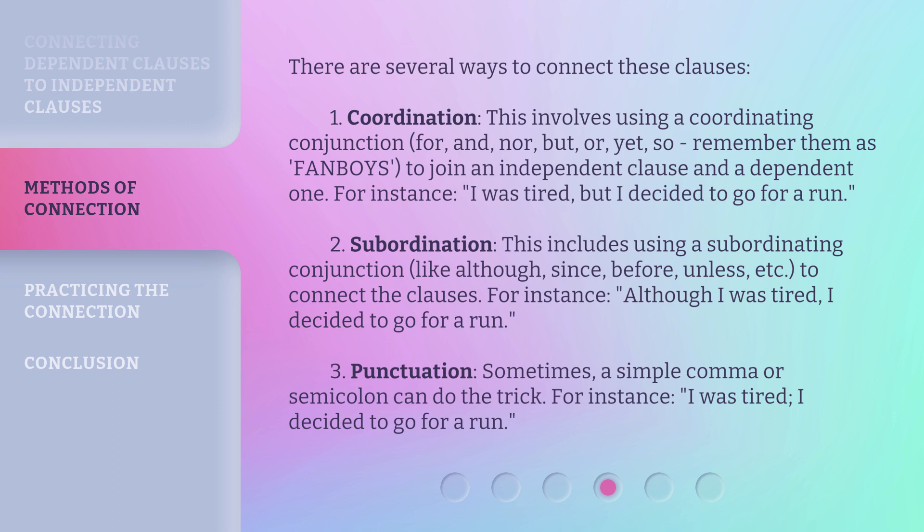2. Subordination: This includes using a subordinating conjunction, like 'although,' 'since,' 'before,' 'unless,' etc., to connect the clauses. For instance: 'Although I was tired, I decided to go for a run.' 3. Punctuation: Sometimes a simple comma or semicolon can do the trick. For instance: 'I was tired; I decided to go for a run.'